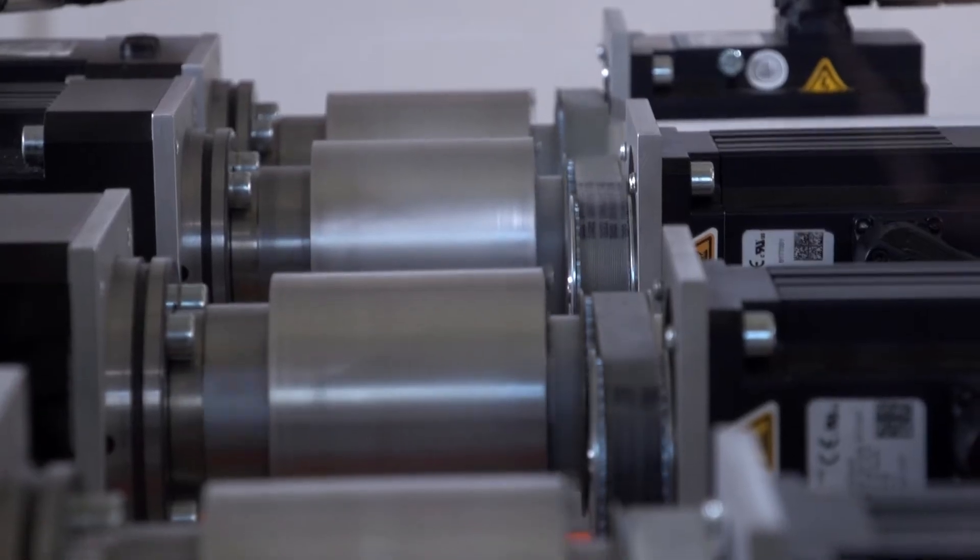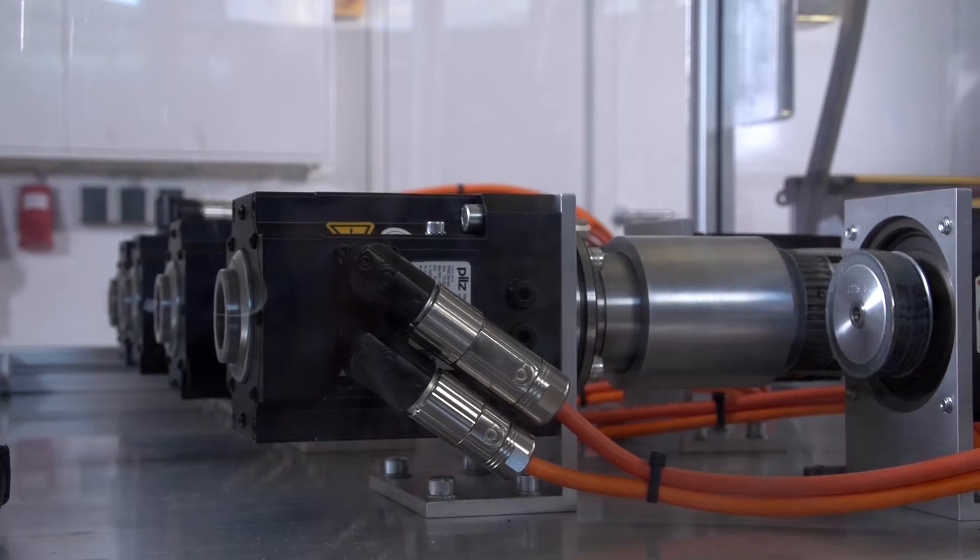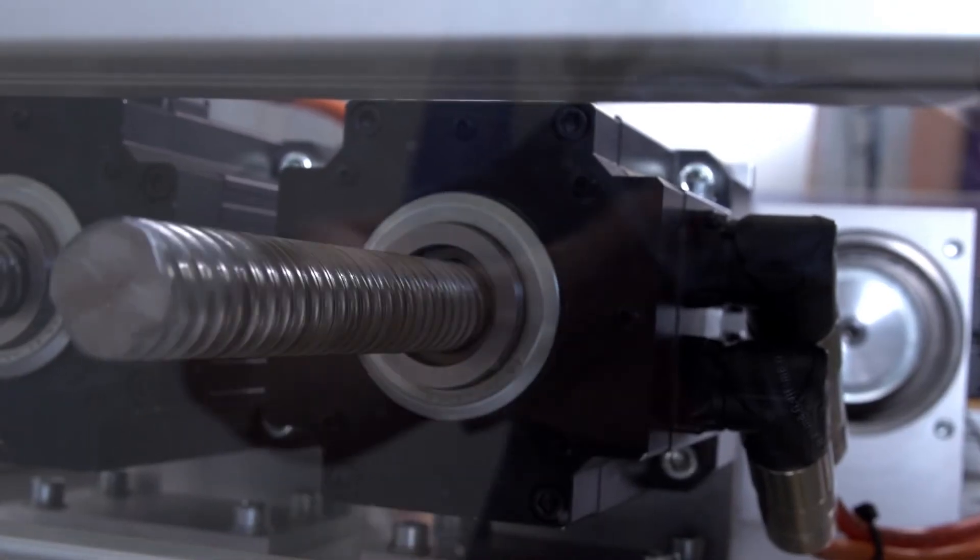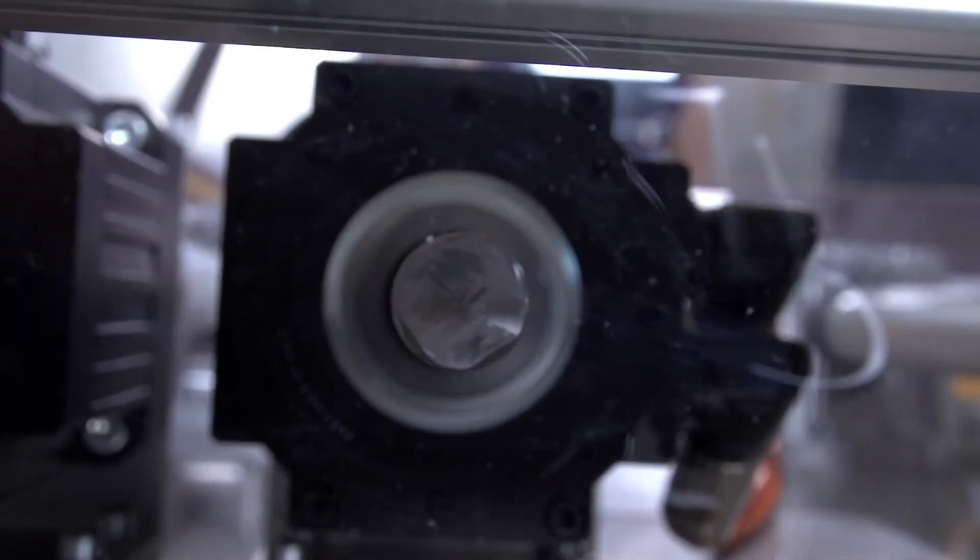The power is transmitted via a toothed belt. The crosswise movement is made using a so-called linear actuator. The rotating ball screw quickly pushes the spindle back and forth.